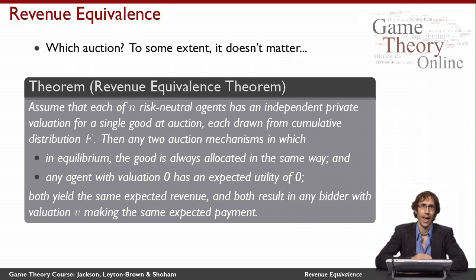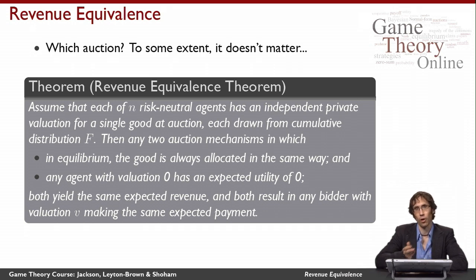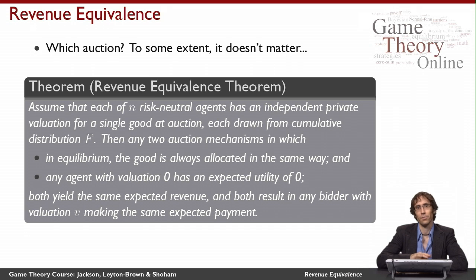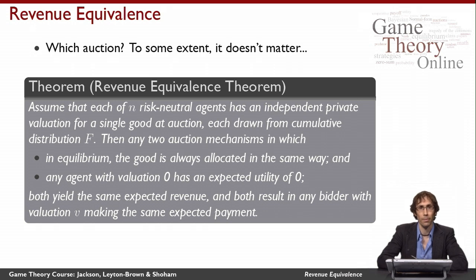Secondly, that an agent with valuation zero — an agent with the lowest possible type — would have an expected utility of zero in the auction. If these two properties hold across both auctions, then the revenue equivalence theorem tells us that both auctions yield the same expected revenue, and indeed that both result in any bidder with the same valuation making the same expected payment. In other words, as long as two mechanisms allocate in the same way and charge an agent with the lowest possible valuation zero,